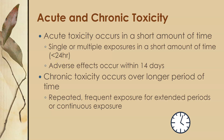Acute toxicity occurs in a short amount of time — a single or multiple exposures within less than 24 hours — and adverse effects can occur within 14 days. Chronic toxicity occurs over longer periods of time, with repeated frequent exposure for extended periods or continuous exposure. Toxins can exhibit both acute and chronic toxicity. That concludes the introduction to toxicology.